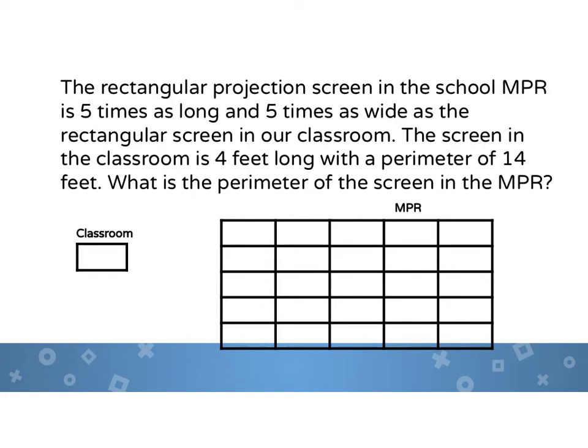Okay so now we're going to do a real-world problem. The rectangular projection screen in the MPR is five times as long and five times as wide as the rectangular screen in our classroom. So I've kind of drawn a picture here, you'll see the classroom and then the MPR, it's one two three four five, one two three four five times as long and then one two three four five, five times as wide. So my question is what is the perimeter of the screen in the MPR? So first of all I need to find the actual width of my classroom projector screen because I already know that the perimeter is 14 feet and I know that it's four feet long, so now I just need to find out how wide it is.